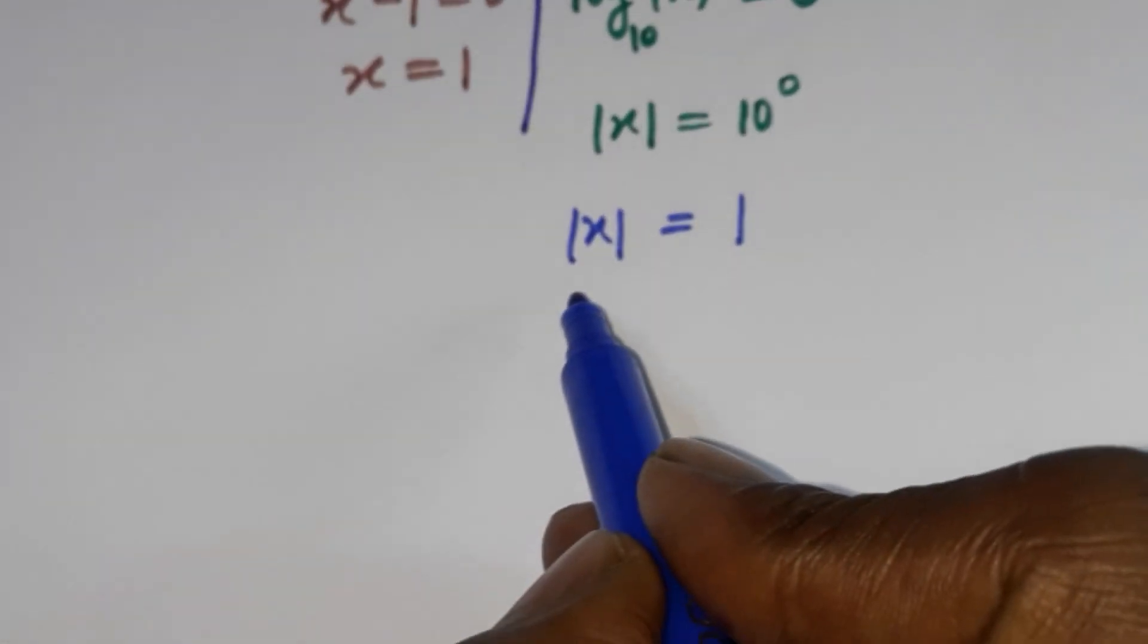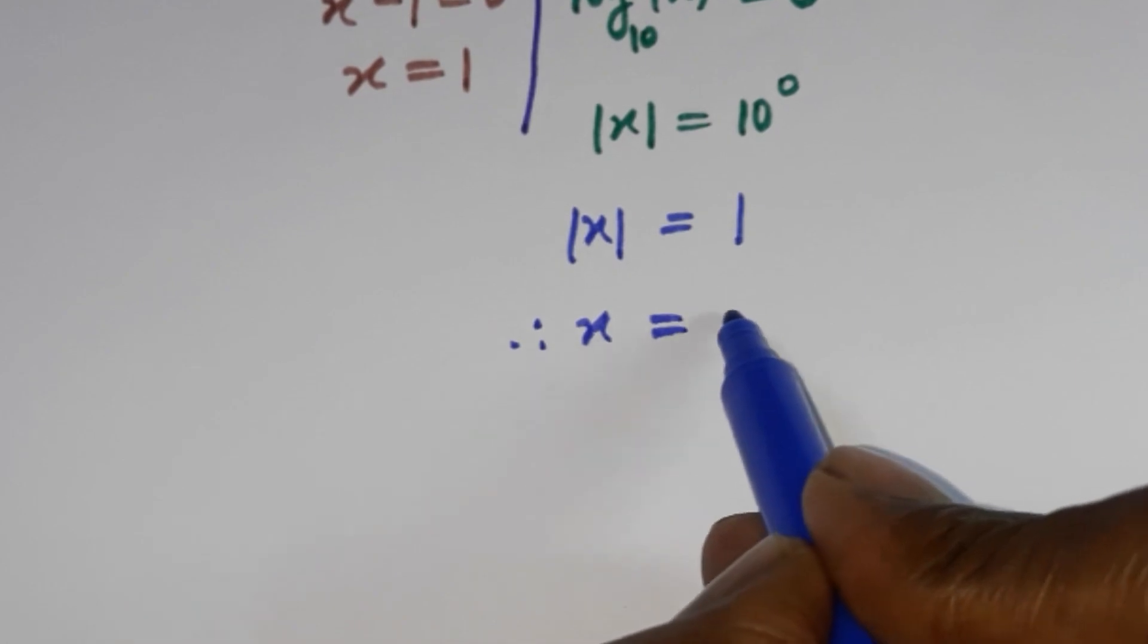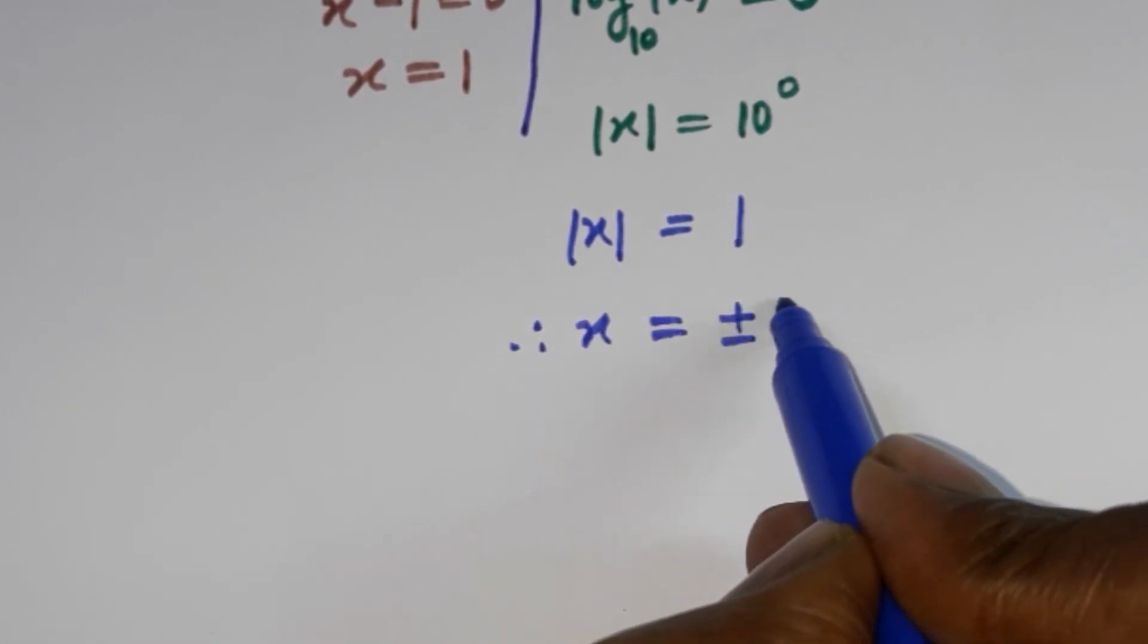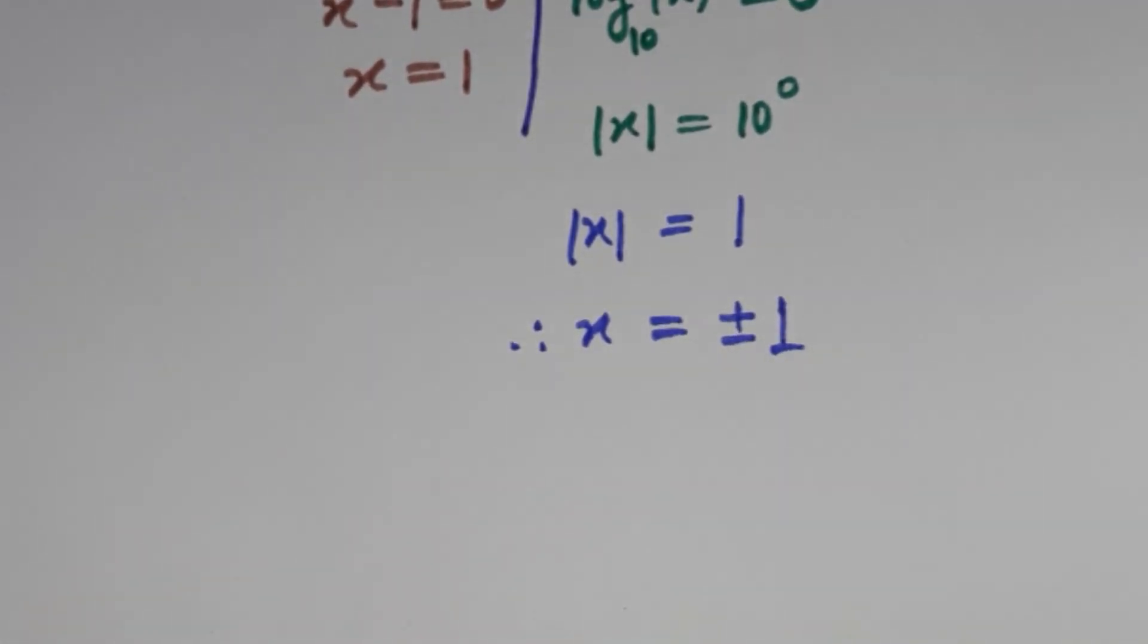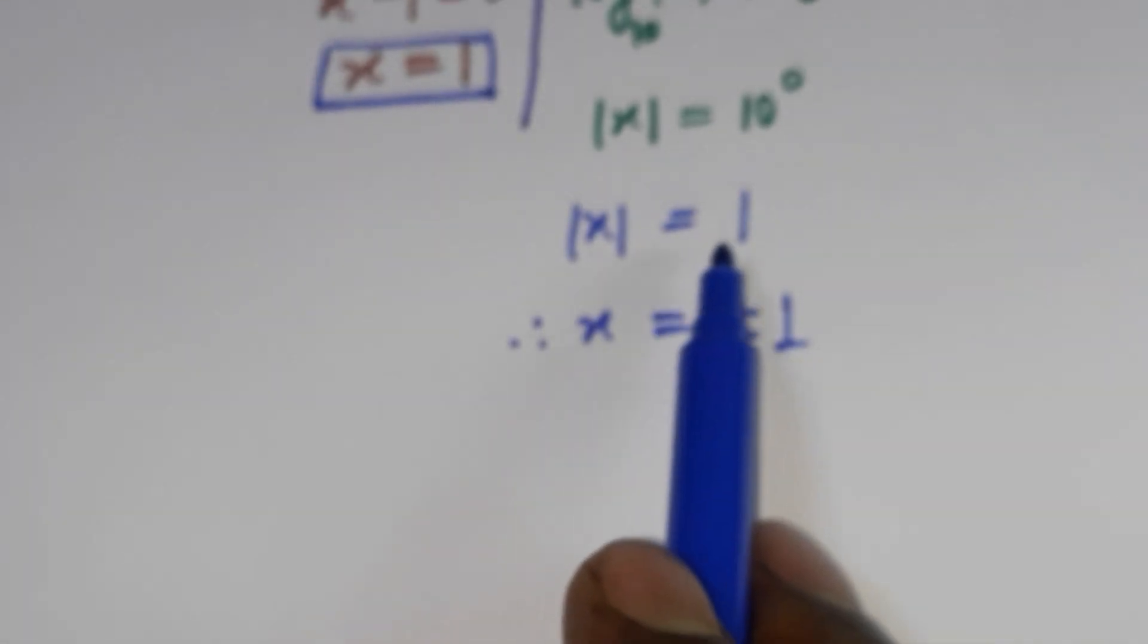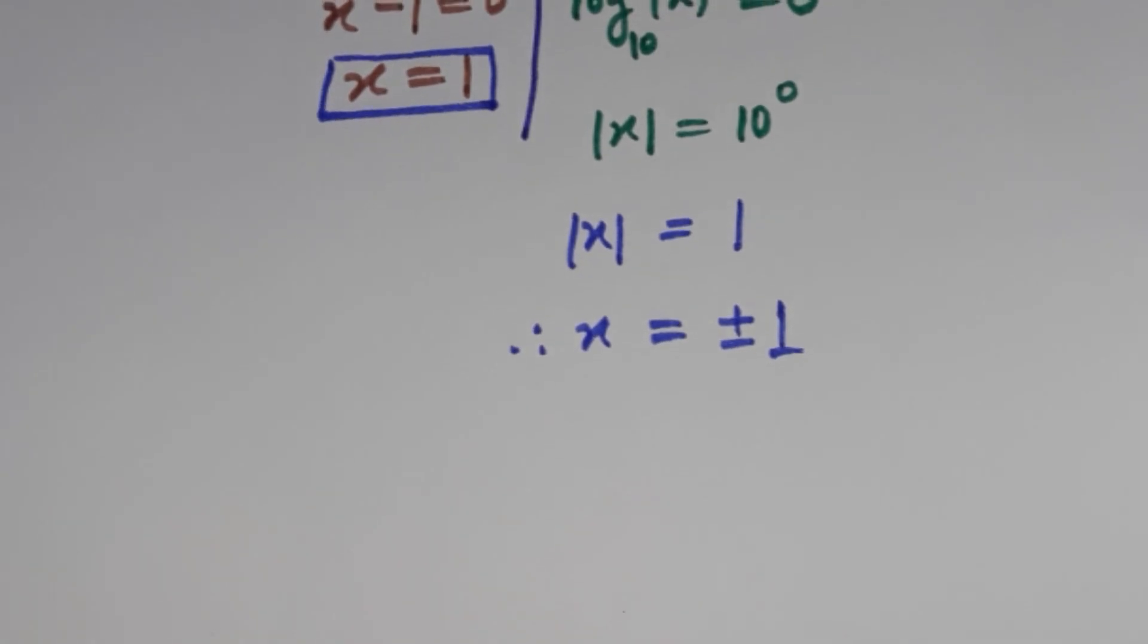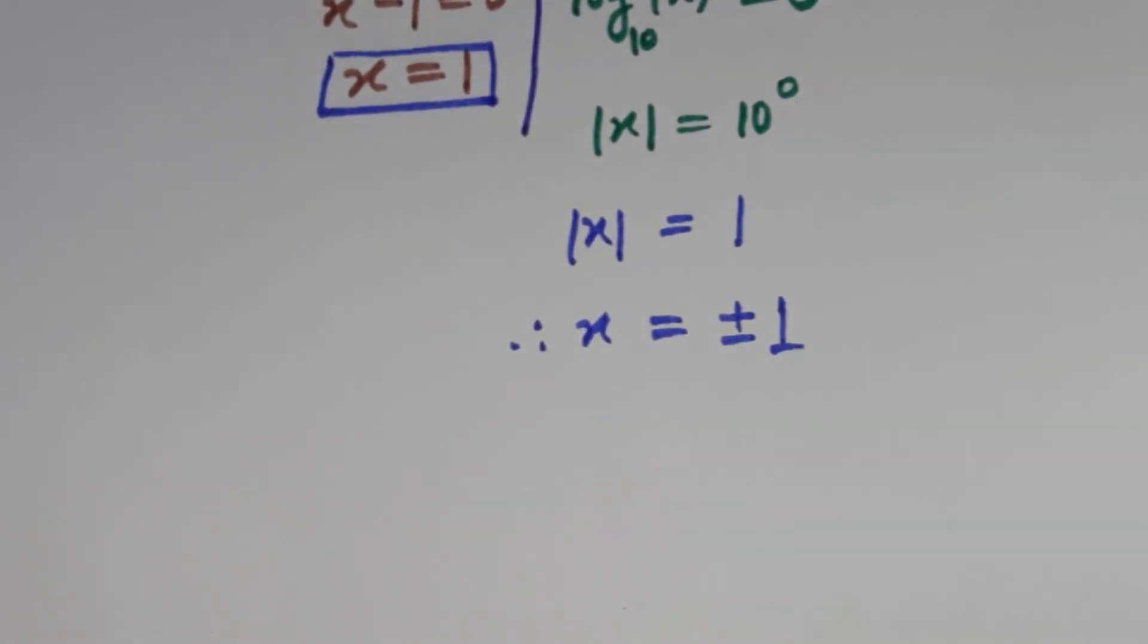Now we can say that mod x equal to 1, this implies that x equal to plus or minus 1. Solution: we have this x equal to 1, mod x equal to 1 here, or x equal to 1. So we have two solutions, x equal to plus minus 1.